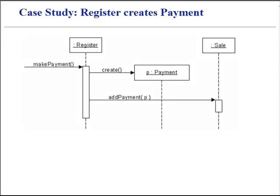Assume we have a need to create a cash payment instance and to connect it with the sale object. What class should be responsible for this operation? Since register records a payment in the real-world domain, the register is one of the candidates for creating the payment. The register object could send a message to add payment to the sale, passing along the new payment as a parameter. This is illustrated by the sequence diagram.